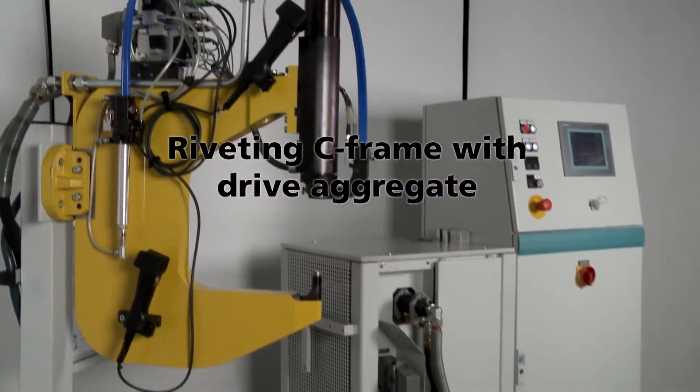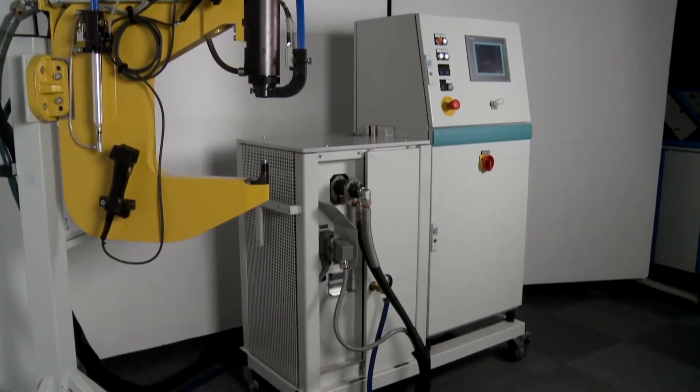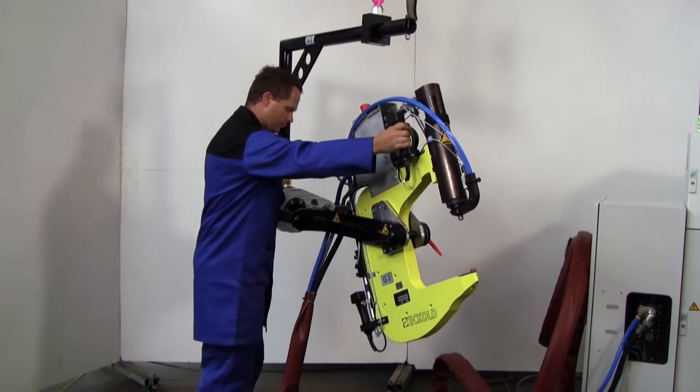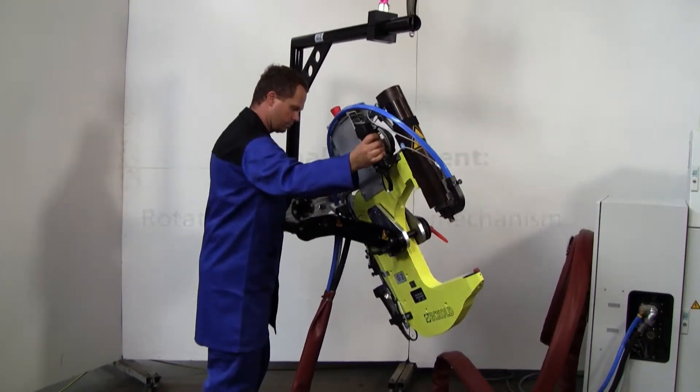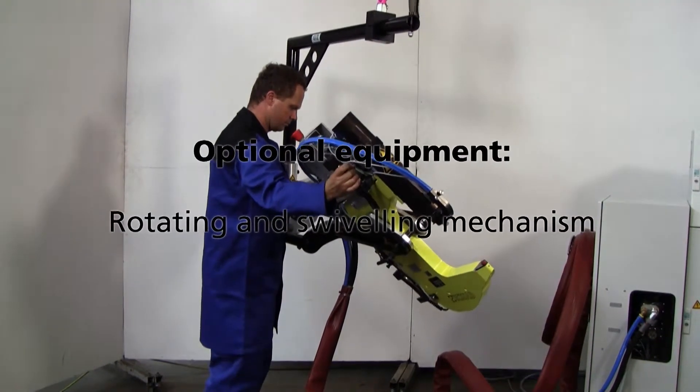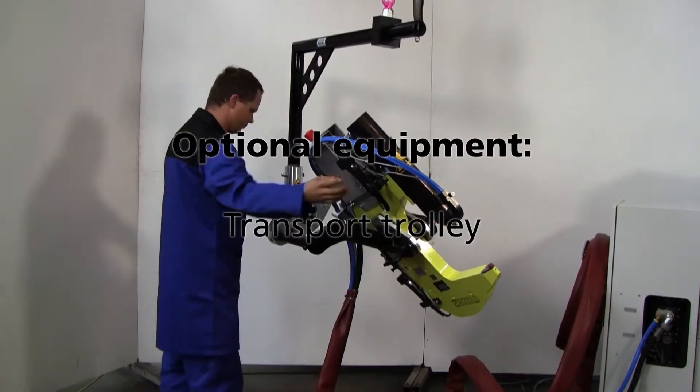The system consists of a riveting C-frame and a drive aggregate. To allow for operation by a single person, it can be equipped with a rotating and swiveling device and a transport trolley.